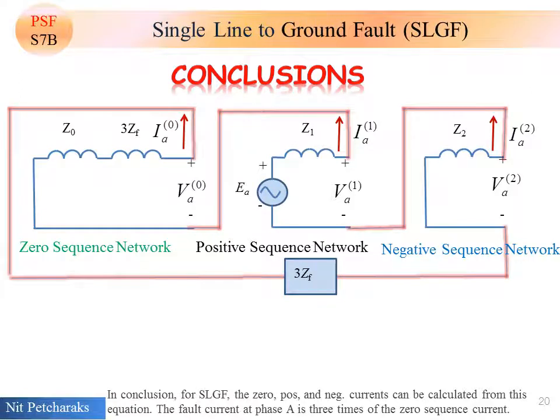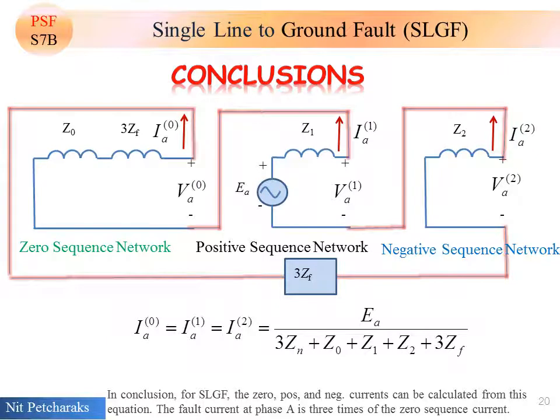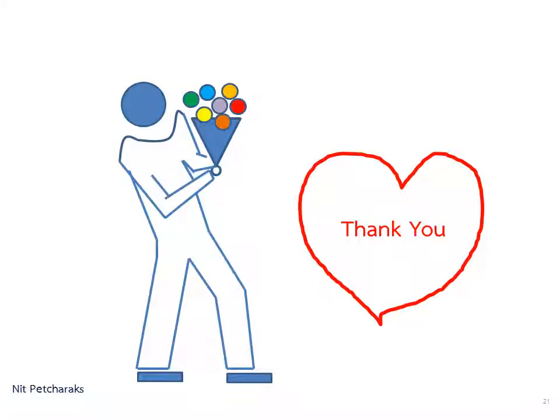In conclusion, for single line to ground fault, the zero, positive, and negative current can be calculated from this equation. Fault current at phase A is three times of the zero sequence current. Thank you for your attention. Please stay tuned for more clips.